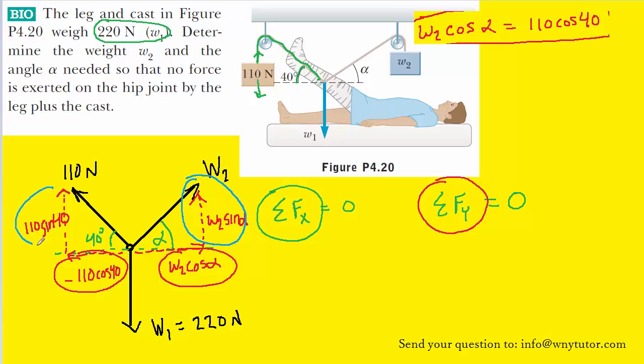We can refer back to the free body diagram to remind ourselves that we have three forces acting in the y-direction. We have w2 sine of alpha, we have 110 sine of 40, both of which are pointing up and will therefore be positive. And then we have the weight of the leg, which is pointing downward, and as a result, we'll have a negative value to it. So we'll add those three forces that we just circled and set them equal to zero.